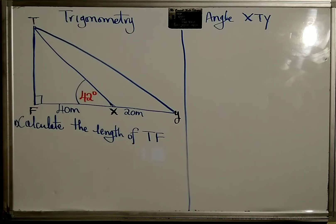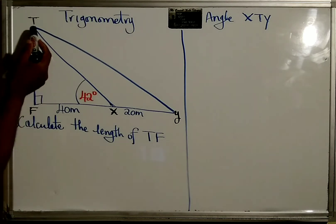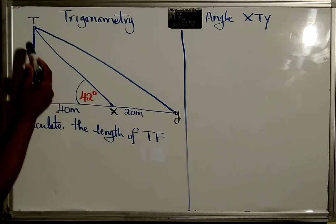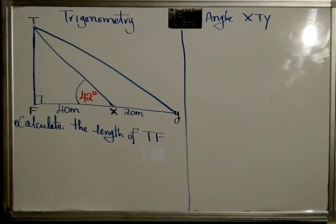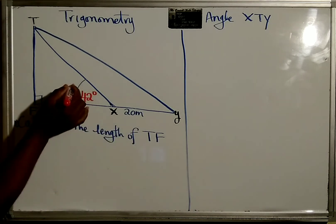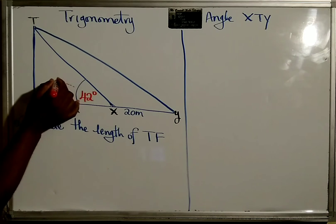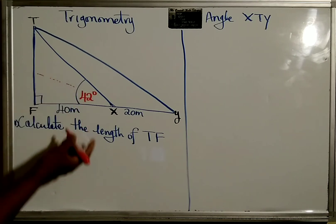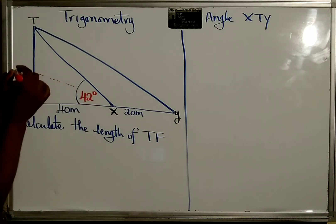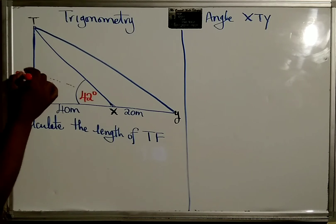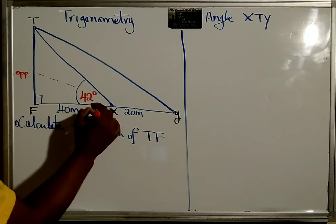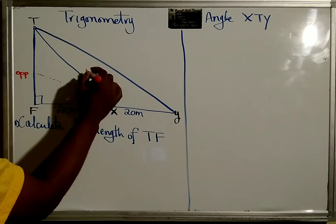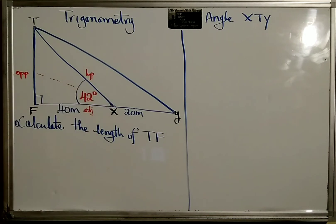Looking at this math triangle right here, it's a right angle triangle and we're given this side. We know it's sin, cos, and tan. To determine which to use, we draw our dotted line from this. So this will be our opposite, this will be our adjacent, and this is our hypotenuse - the longest side.